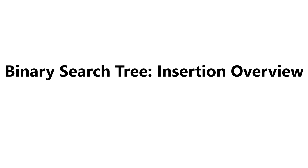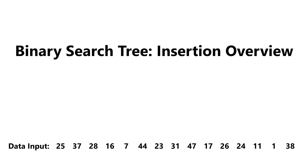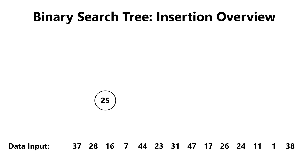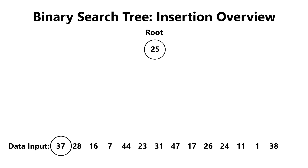So to get started, let's say that I want to insert the following data into our binary search tree. The first node that we're going to insert into our tree will always become the root. Since our tree is empty, 25 is inserted as the root node. The rule of thumb is that we start at the top: if it's less than what we're currently at, go left; if it's greater than where we're currently at, go right. We repeat this process until we find an empty spot to insert it.